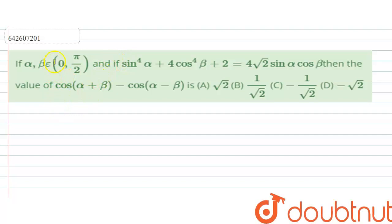Hello everyone. The question says that alpha, beta belong to (0, π/2), and if sin⁴(alpha) + 4cos⁴(beta) + 2 equals 4√2 · sin(alpha) · cos(beta), then find the value of cos(alpha + beta) minus cos(alpha - beta).